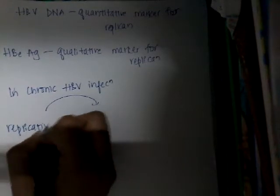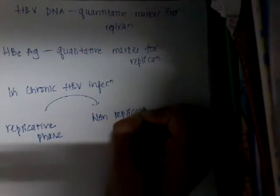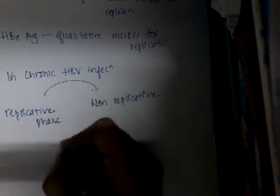Over time in chronic hepatitis B infection, there is conversion of the replicative phase to the non-replicative phase. During this conversion, there is seroconversion of HBeAg positivity to anti-HBe positivity. HBV DNA is demonstrable in hepatocyte nuclei in some cases of chronic infection.